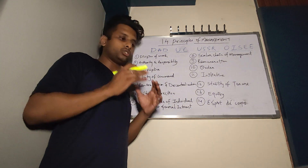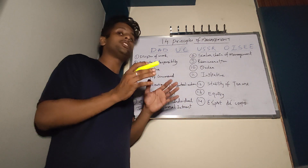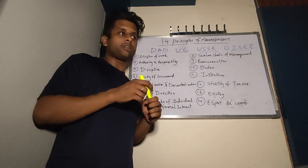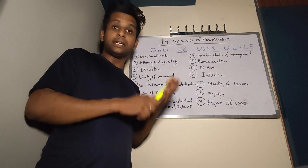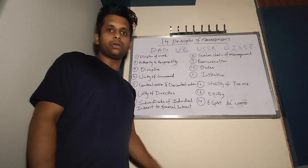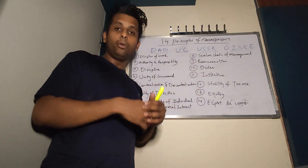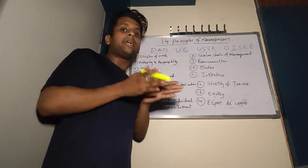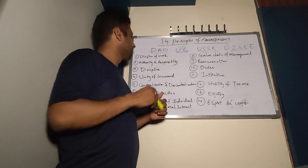Division of Work means work should not be given randomly to anyone; it should go to the right skilled person. For example, if you have a sales development team doing a sales launch, one person decides the location, another decides the blueprint, and so on. Management should divide work so that it is completed faster.